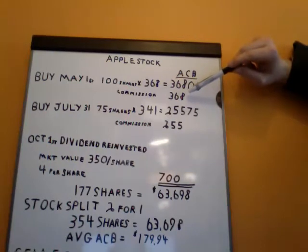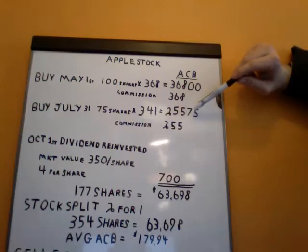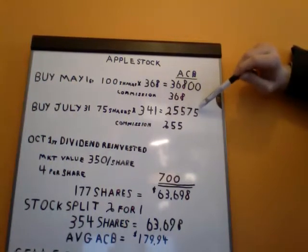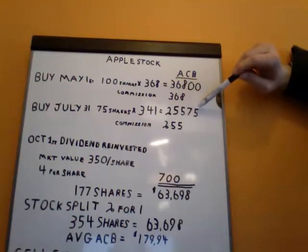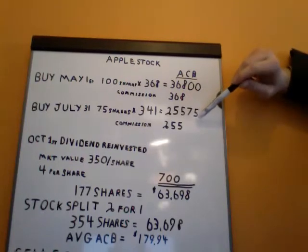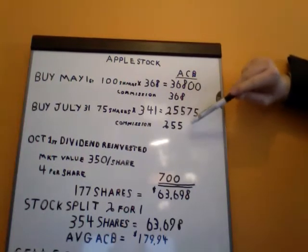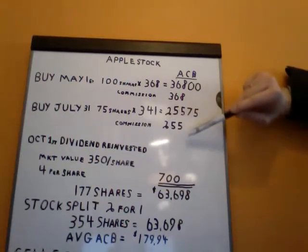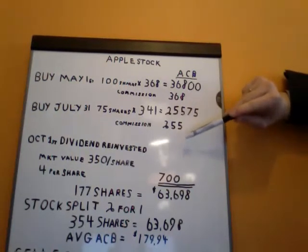Let's suppose July 1st we decided to buy some more shares of Apple. We bought 175 shares at $341, giving us an ACB that we put into it of $25,575. We paid some commission again of $255, which is 1% of that number.